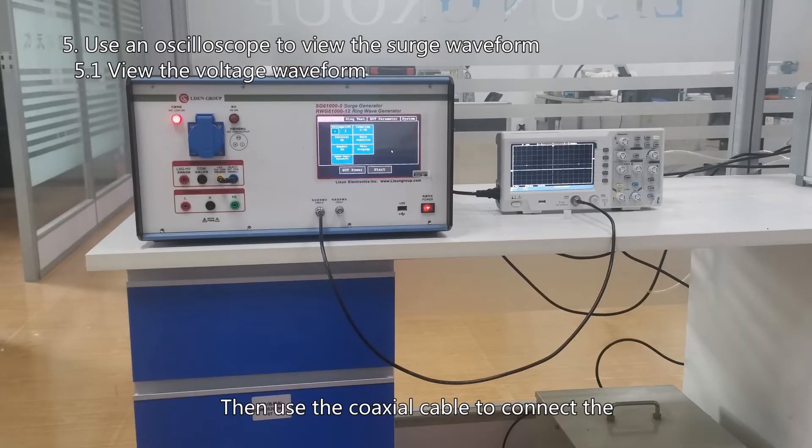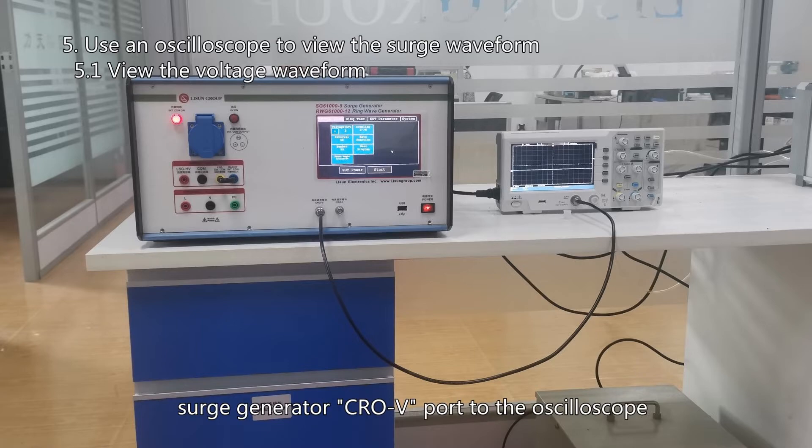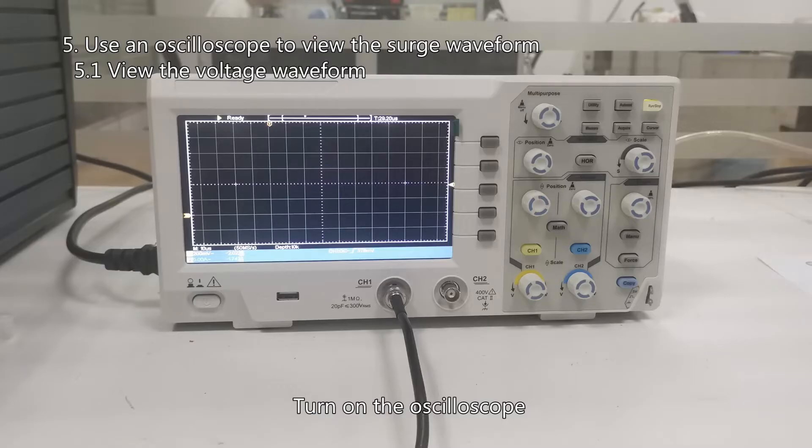Then use the coaxial cable to connect the surge generator CROV port to the oscilloscope. Turn on the oscilloscope.